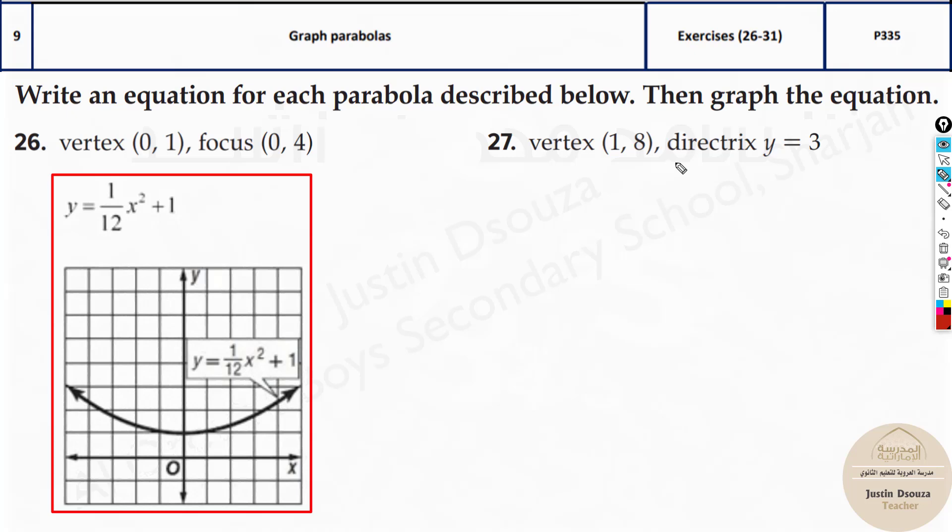Now over here the next problem we don't have the focus point. We have the directrix. What will you do in this case? In this case it's easier because we know the directrix formula y is equal to, y is given. Whenever y is given directrix, the orientation is y is equal to a into x minus h the whole square plus k. This is the thing.